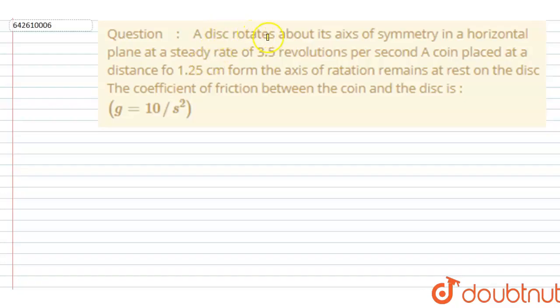A disk rotates about its axis of symmetry in a horizontal plane at a steady rate of 3.5 revolutions per second. A coin placed at a distance of 1.25 cm from the axis of rotation remains at rest on the disk. Then you have to calculate the coefficient of friction between the coin and the disk.